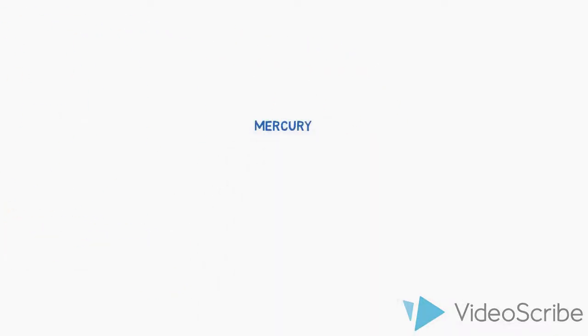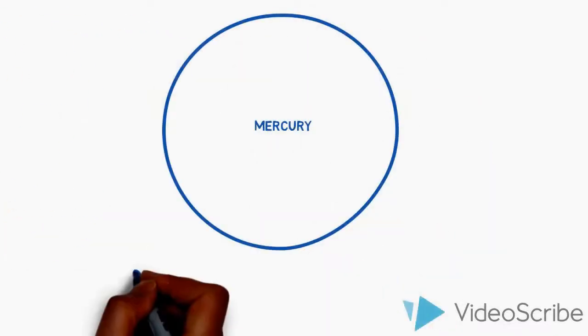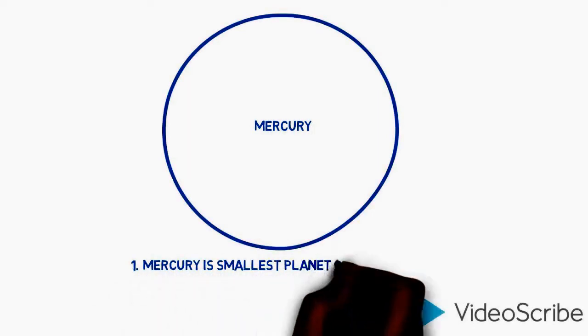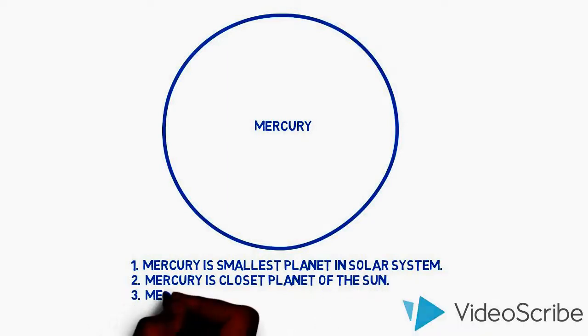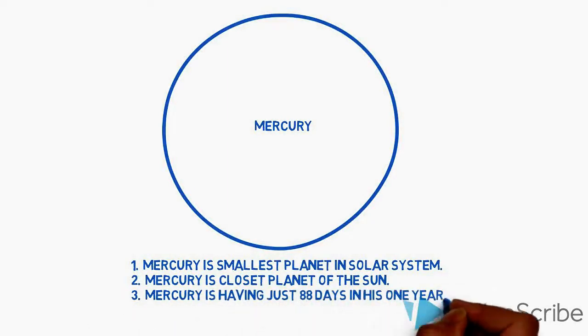Mercury. Mercury is smallest planet in solar system. Mercury is closest planet of the Sun. Mercury is having just 88 days in his one year.